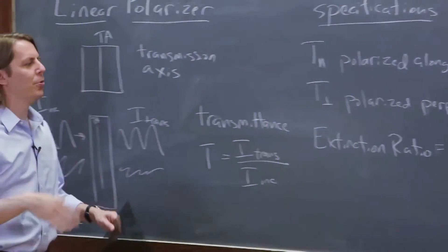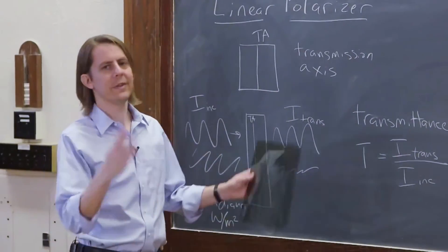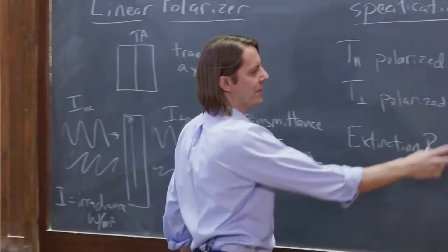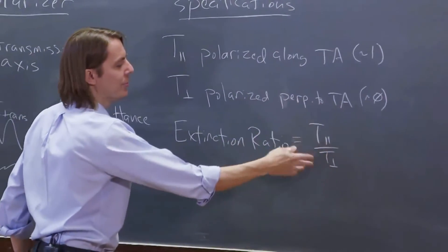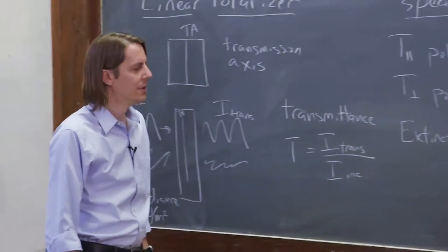So typical polarizer, they'll say, oh, the extinction ratio is 9,000. Right? So if it's like 99 here, and then 0.01 there, 99%, 1%, that's sort of like a 10,000 extinction ratio.